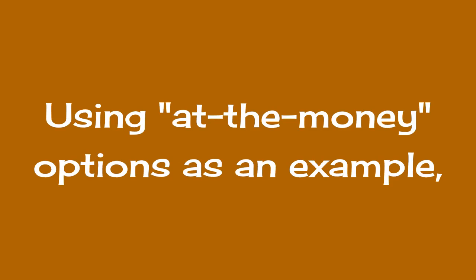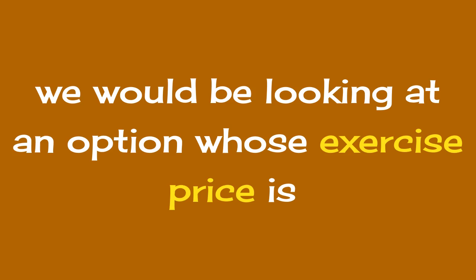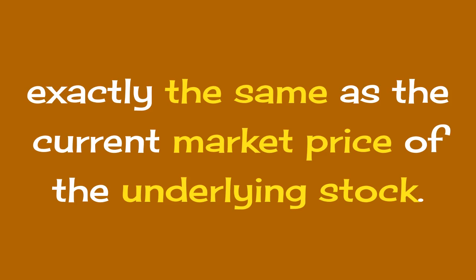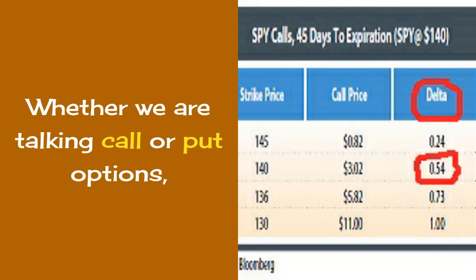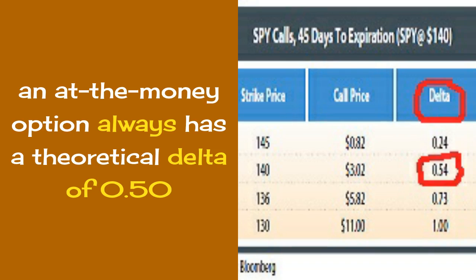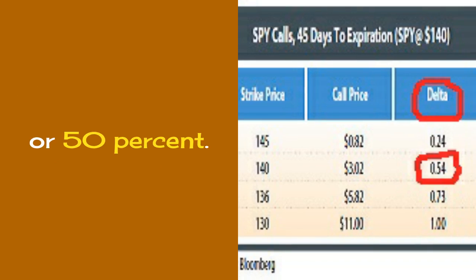Using at-the-money options as an example, we would be looking at an option whose exercise price is exactly the same as the current market price of the underlying stock. Whether we are talking call or put options, the at-the-money option always has a theoretical delta of 0.50 or 50%.